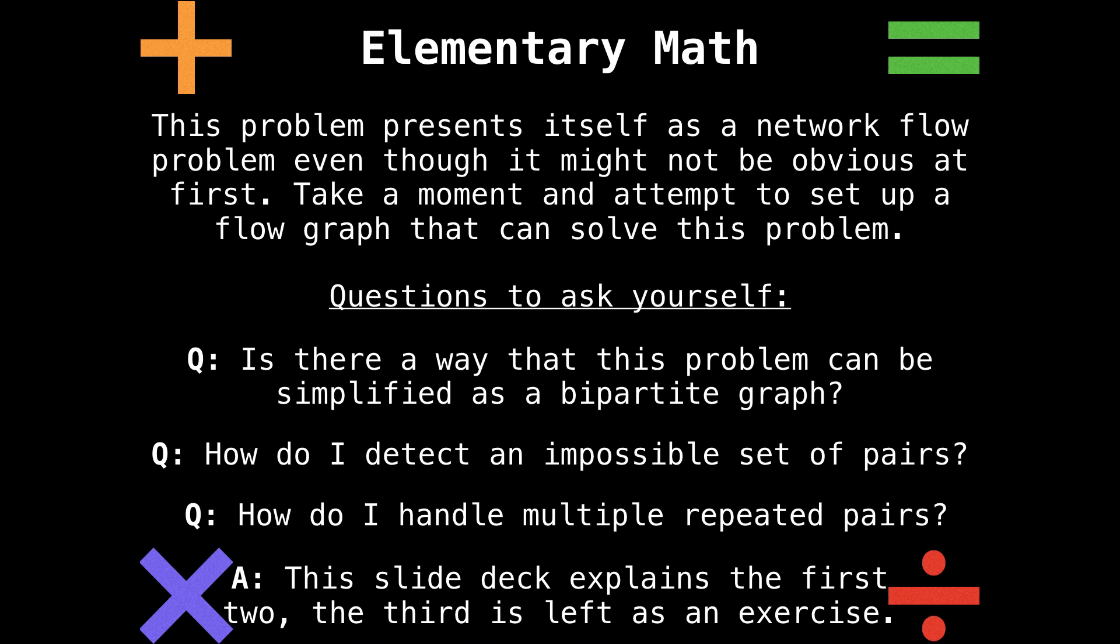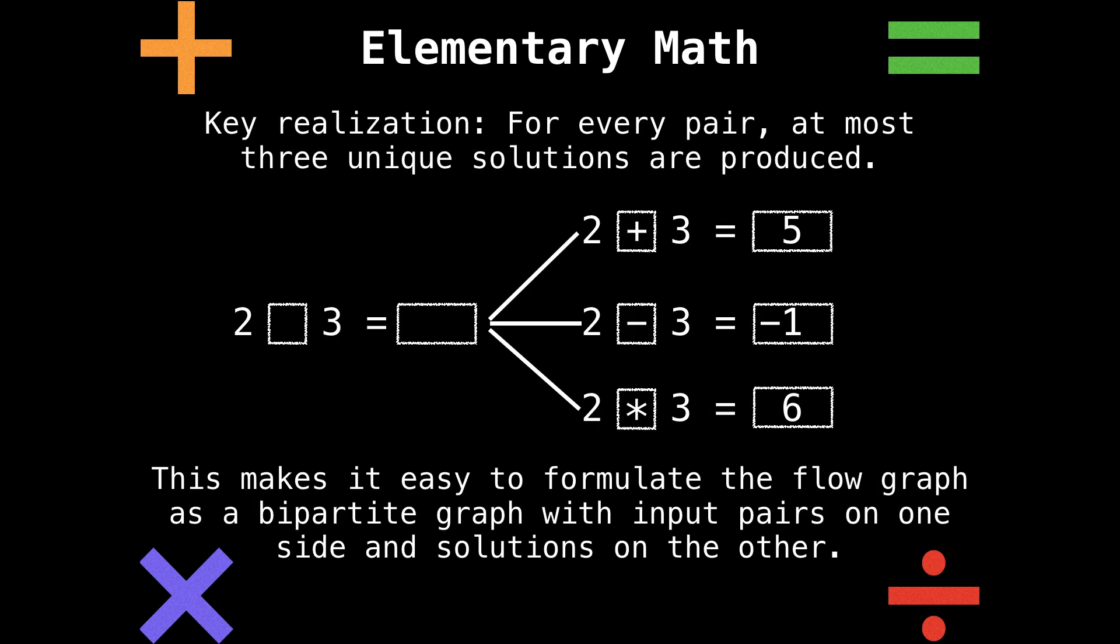So thinking about how we're going to solve this problem a little more, a key realization to make is that for every input pair, at most three unique solutions are produced. Think of the input pair two and three. Well, for that pair, we can either add two and three, subtract two and three, or multiply two and three. So there can be at most three unique results. There may be less if there are collisions—think of the input pair (0,0): zero plus zero, multiplied by zero, and zero subtracted by zero is also zero. So we may end up with less than three unique solutions, and that's fine. The great thing about this is that we can easily set up a bipartite flow graph from this because we can have input pairs on one side and solutions on the other side.